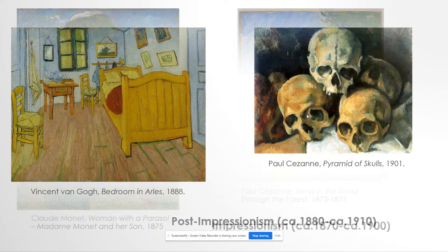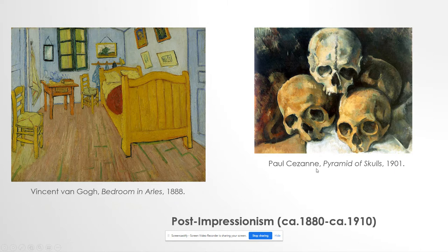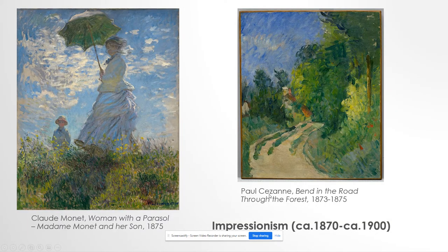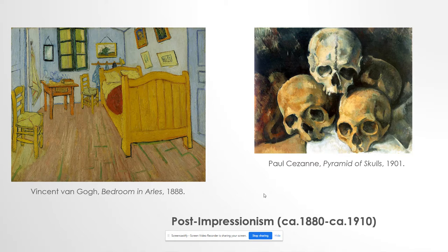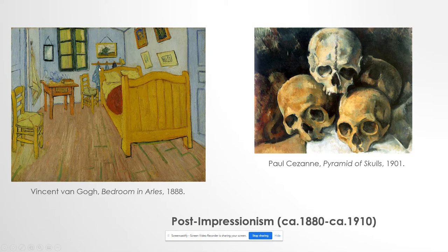Post-Impressionism runs about 1880 to 1910 — they're kind of going on at the same time. Cézanne appears in both because in his early years he's an Impressionist, a compatriot of Monet — both French, both working in France — but Cézanne breaks with the Impressionists and his style changes, as you can see in the Pyramid of Skulls in 1901. The Post-Impressionists, including Vincent van Gogh, reject the Impressionists' concern with naturalistic rendering of light and color. They favor looking at symbolic content, formal order, and structure.